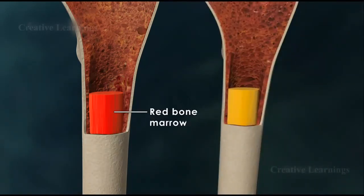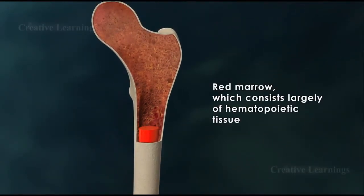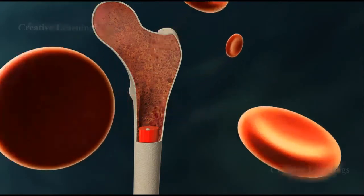Red marrow, which consists largely of hematopoietic tissue, is responsible for the production of red and white blood cells, as well as platelets.